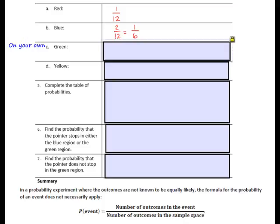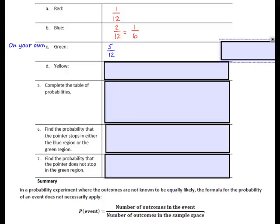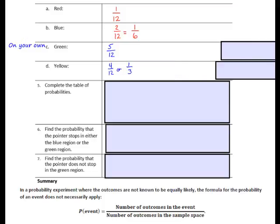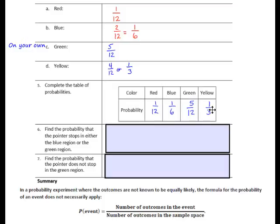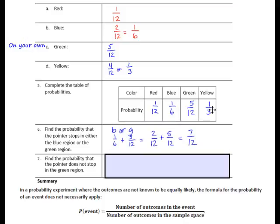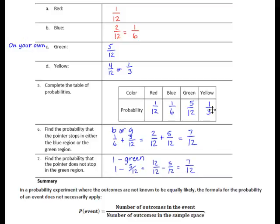Question C: The probability of getting green is 5 out of 12, or 5 twelfths. Question D: The probability of getting yellow is 4 twelfths, or 1 third. Question 5: Complete the table of probabilities — 1 twelfth, 1 sixth, 5 twelfths, and 1 third. Question 6: The probability that the pointer stops in either blue or green — blue is 1 sixth and green is 5 twelfths; their sum is 7 twelfths. Question 7: The probability that the pointer does not stop in the green region — find the probability of green and subtract it from 1, giving 7 twelfths.